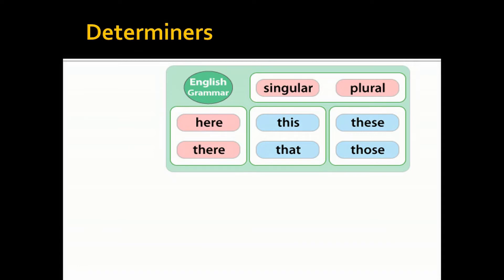While these and those are used for plural. Examples: ears, legs, eyes, hands. This and that are used with is, while these and those are used with are. Examples: This is my mouth. That is your nose. These are my ears. Those are your hands.